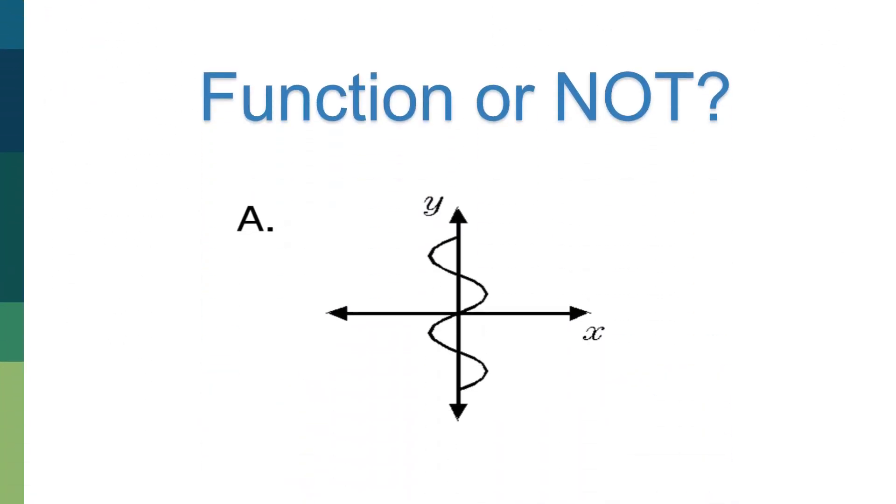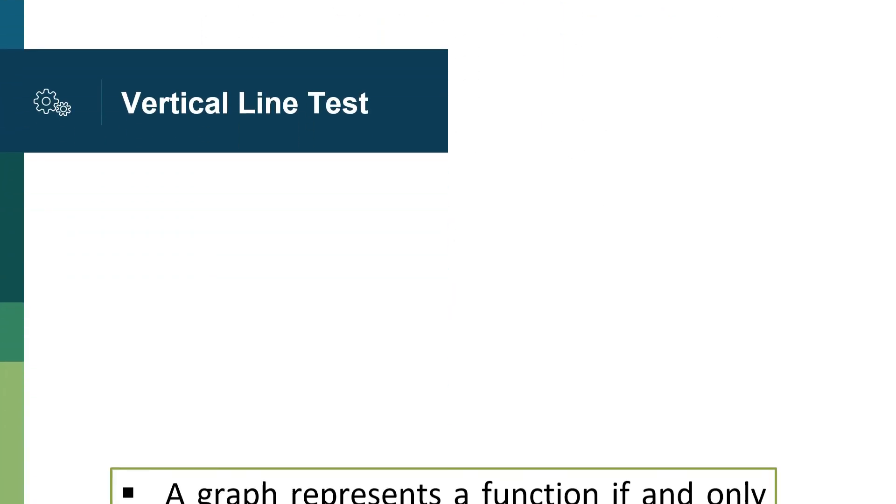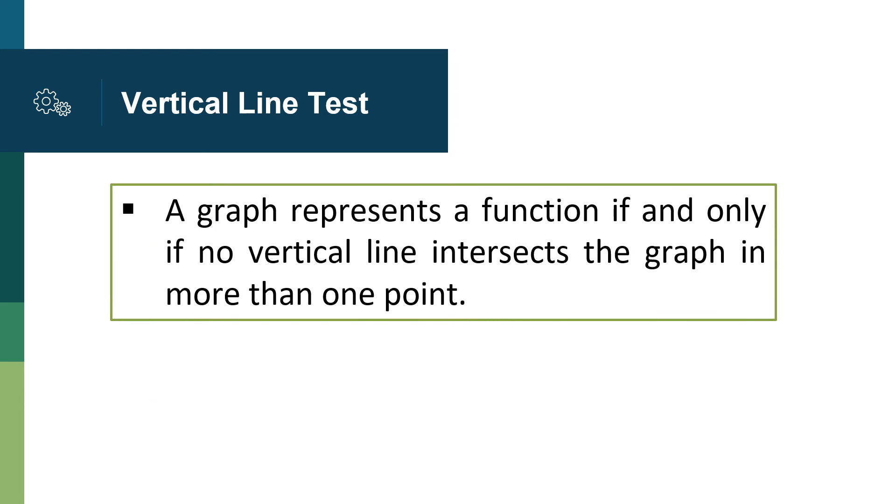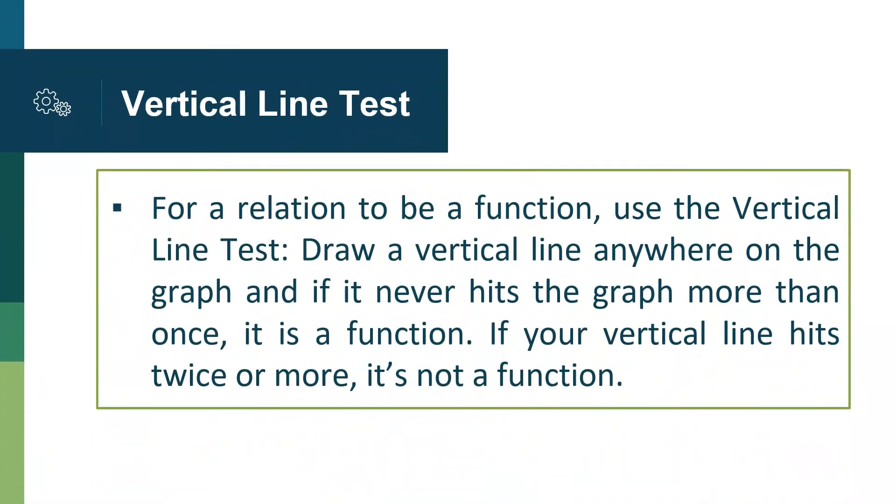We can identify whether the given graph is a function or not by using the vertical line test. The vertical line test is given by the definition, a graph represents a function if and only if no vertical line intersects the graph in more than one point. For a relation to be a function, use the vertical line test. Draw a vertical line anywhere on the graph, and if it never hits the graph more than once, it is a function. If your vertical line hits twice or more, it's not a function.